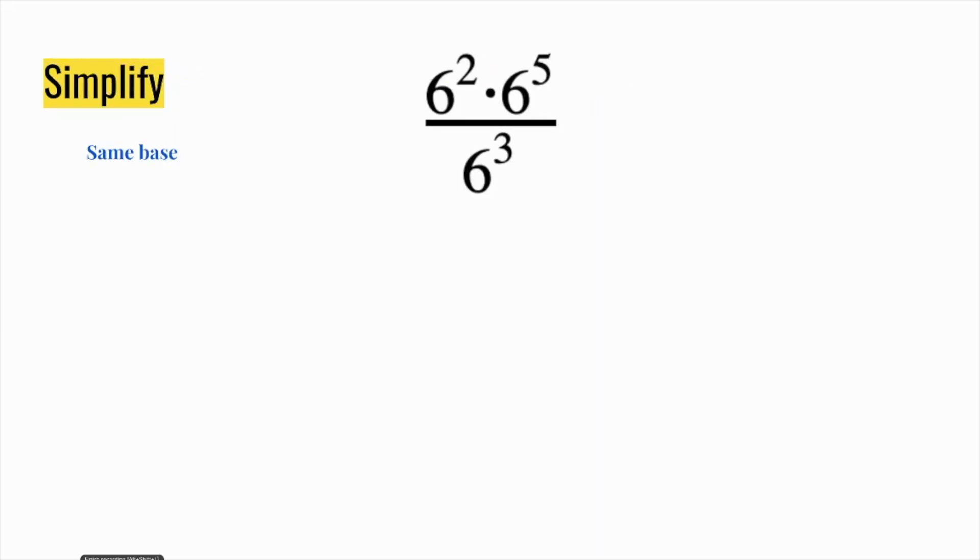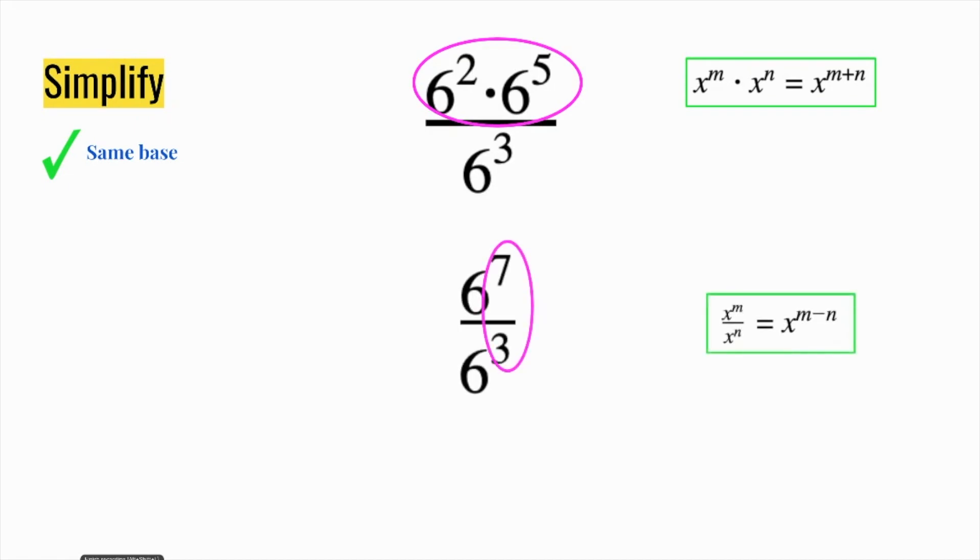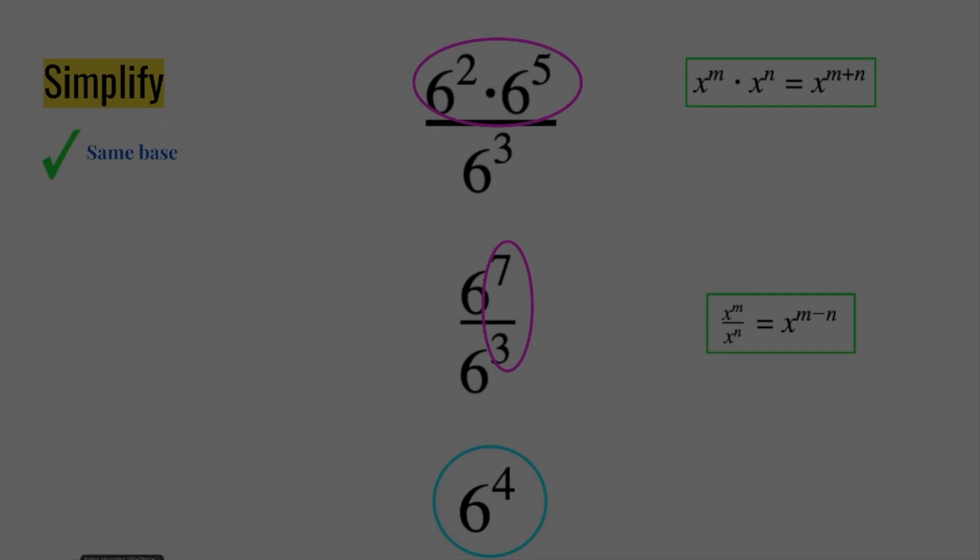In our last example here, first thing I'm going to check, are the base numbers the same? They're all 6, so it works. And I'm going to think of this as a division problem. So I'm going to simplify the top first, and then divide it by the denominator. So 6 to the 2nd times 6 to the 5th. I'm going to add those exponents together to get 6 to the 7th. And then when you're dividing, remember the rule is to subtract your exponents. So my final answer is 6 to the 4th.